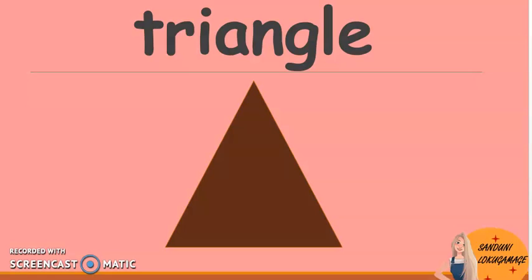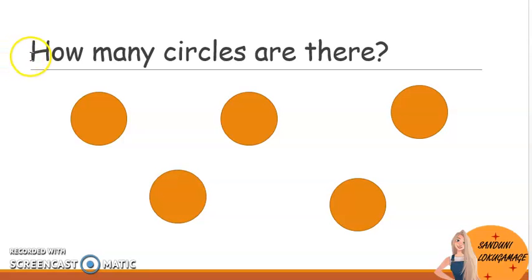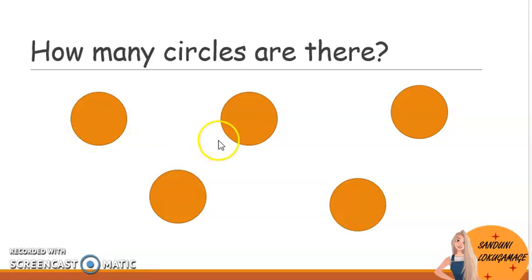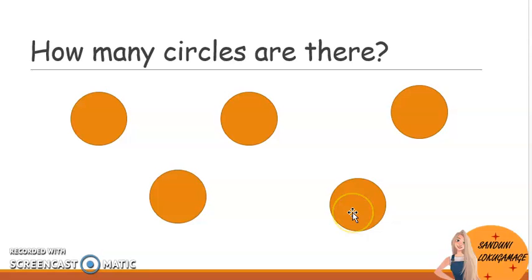Okay, children. Then count the shapes with me. Okay, how many circles are there? Let's count. One, two, three, four, five. Okay, there are five circles.